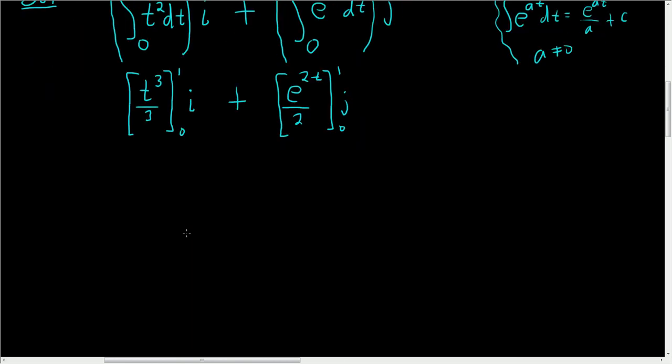Let's keep going. First, we're going to plug in 1. We'll plug in 1 for t, so we get 1 cubed over 3 minus 0 cubed over 3, and then we still have the i.